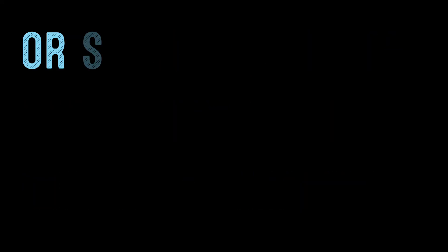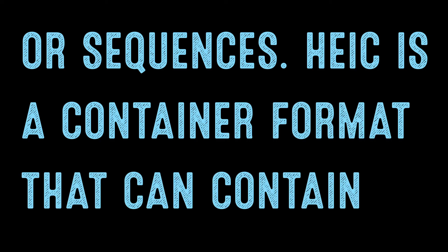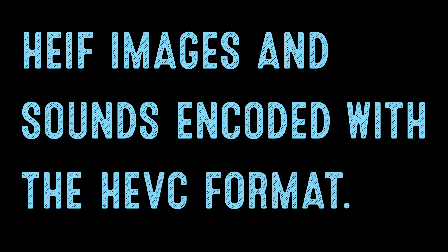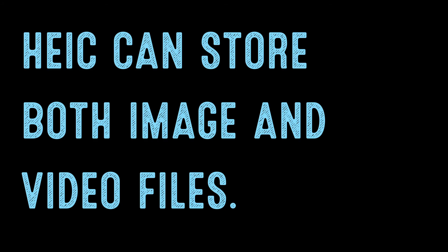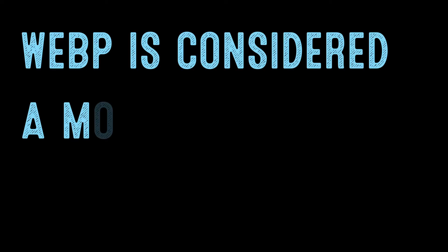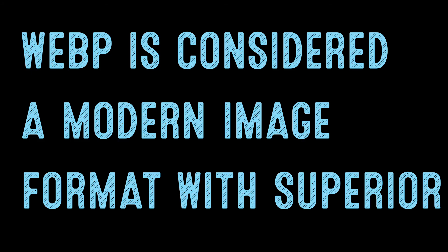HEIF is based on HEVC — High Efficiency Video Compression, also known as the H.265 codec — by the Moving Pictures group. HEIF is a file format for storing individual images or sequences. HEIC is a container format that can contain HEIF images and sounds encoded with the HEVC format, and can store both image and video files.